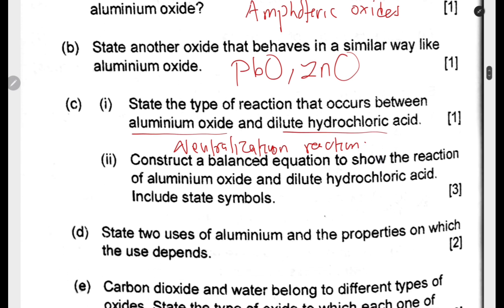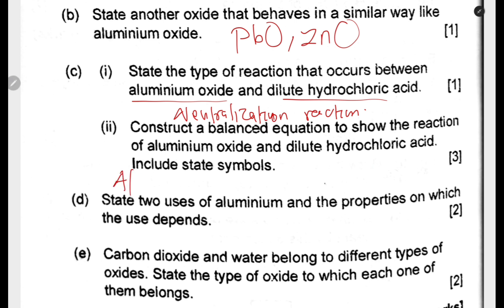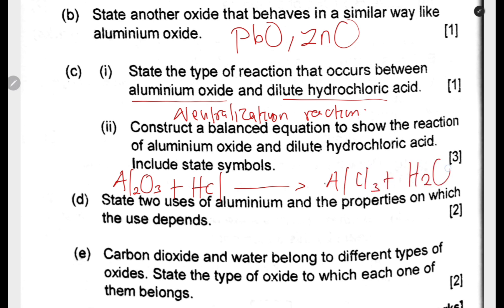Construct a balanced equation to show the reaction of aluminium oxide and dilute hydrochloric acid. Aluminium oxide reacts with HCl to form aluminium chloride plus water. To balance the equation: put 2 in front of aluminium oxide, 12 in front of HCl, 6 in front of aluminium chloride, and 4 in front of water. Please verify that this is correctly balanced.